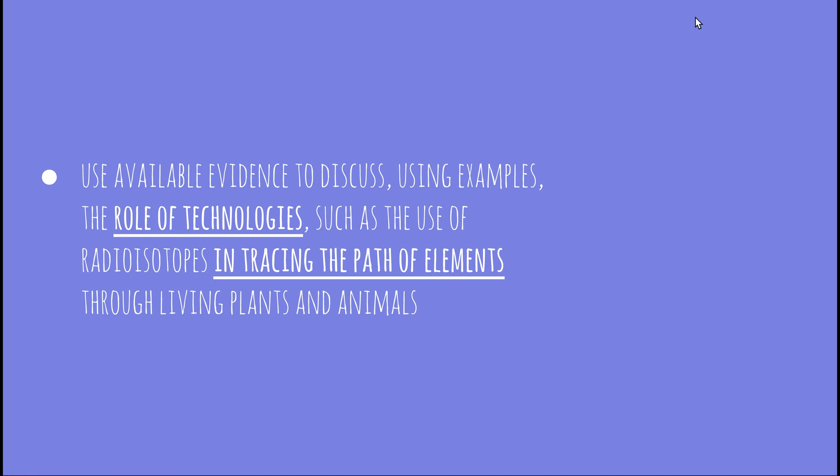We need to look at substances that are able to move through the different transport systems in plants and animals. We looked at the circulatory system in animals and the vascular system, which is made up of the xylem and phloem in plants. So we need to be able to identify technologies and why they're used in tracing the path of elements through these living organisms.